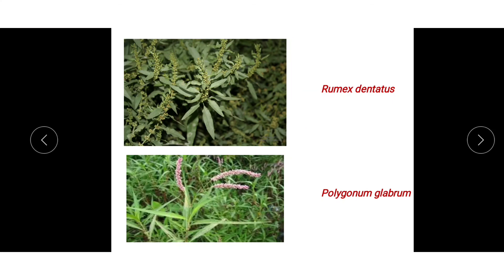Some common examples of the Polygonaceae family are Rumex dentatus and Polygonum glabrum. Thank you.